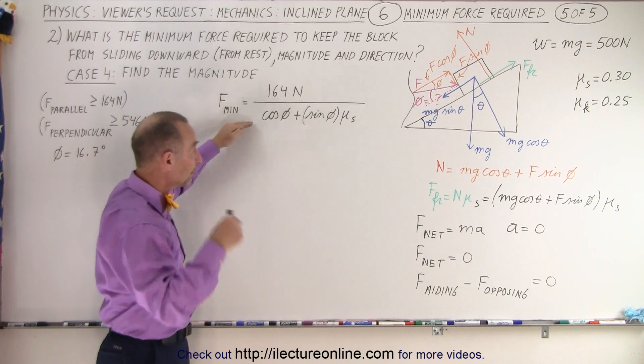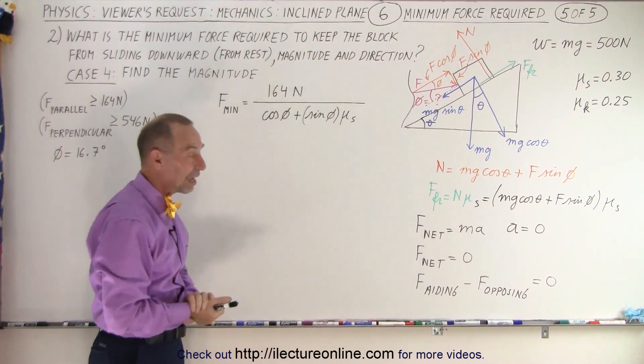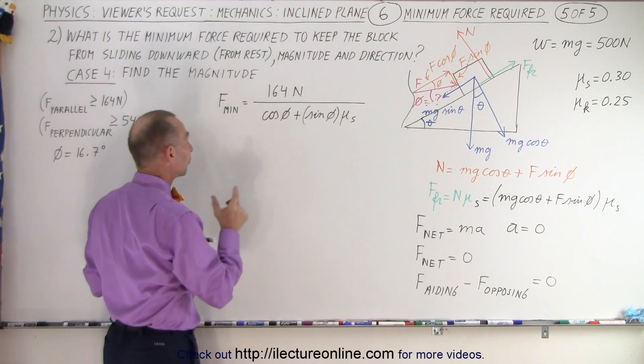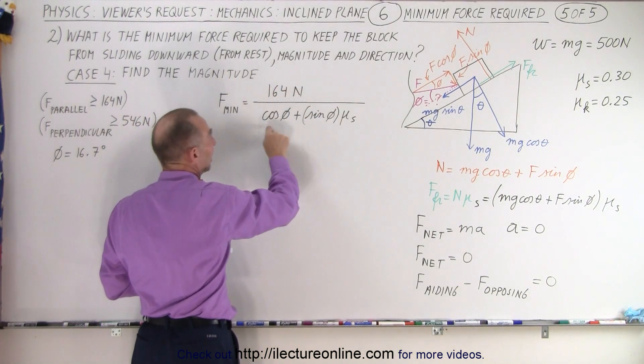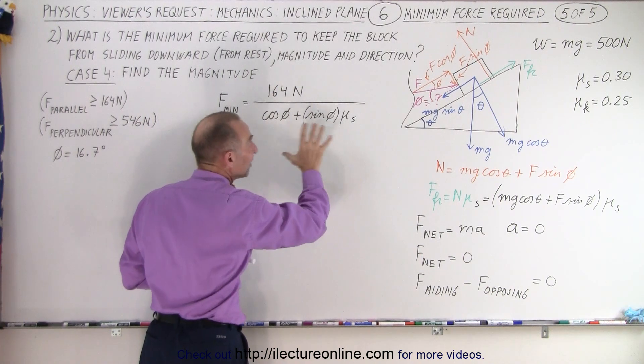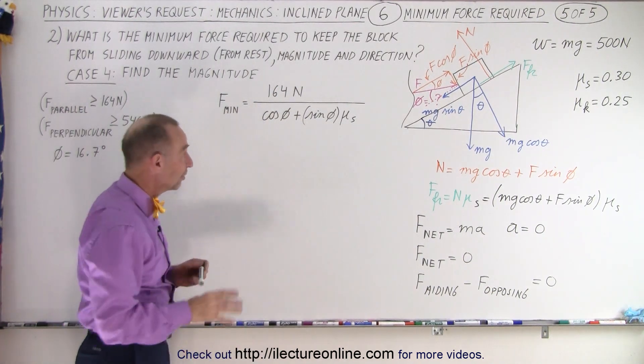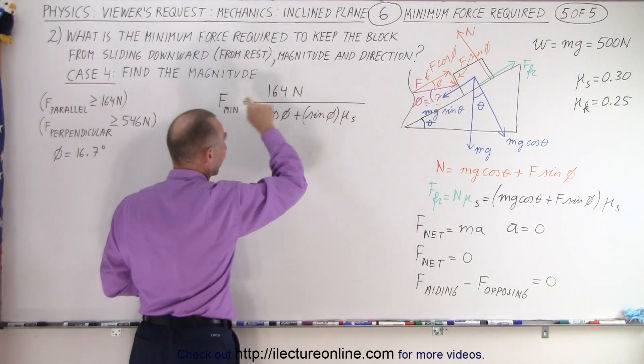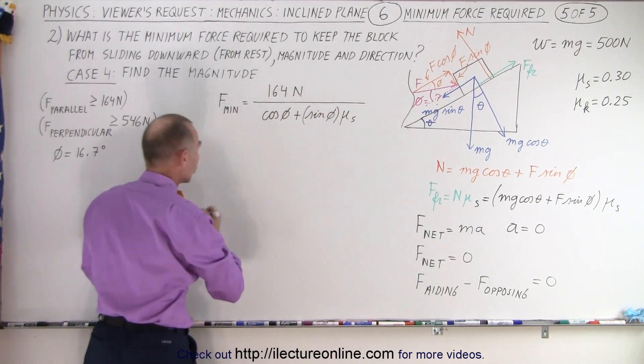Phi of course being the angle that we found in the previous video. If you look at this in the previous video you can see where that equation came from. So now we're going to plug in the values. And of course this will become less if the sum of these two terms is greater than 1. If it's greater than 1, what's in the denominator? Then of course we get a result less than 164 newtons.